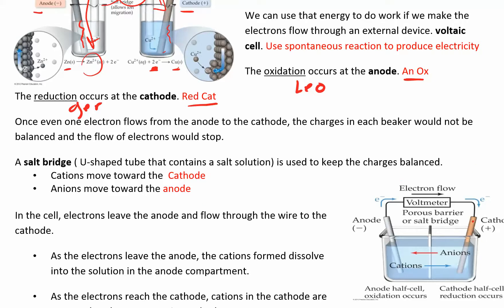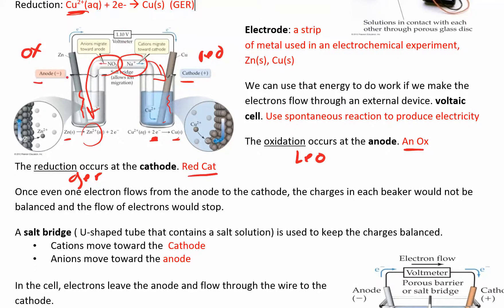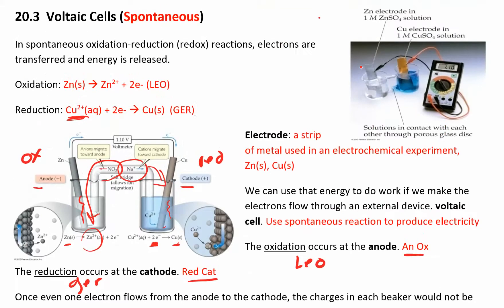You can also represent the cell as two separate compartments connected by a wire. You can measure the cell potential — the difference in potential energy between the anode and the cathode — using a voltmeter.